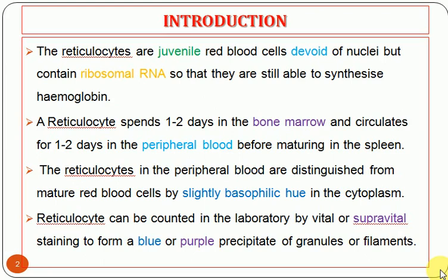After production of the reticulocyte in the bone marrow, the reticulocyte will spend one to two days in the bone marrow, then come out into the circulation for one to two days in the peripheral blood. It then travels to the spleen for maturation, where it becomes a biconcave mature RBC and re-enters circulation.